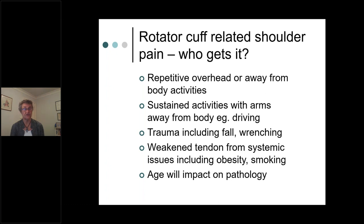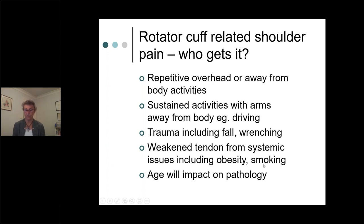There are systemic and lifestyle factors that can affect tendon pathology, including obesity and smoking. Age is also an important factor. An older person with a degenerative tendon may not need much force to sustain a tear, as tissue structures become less strong with age. A young person may need a lot of trauma and force to sustain a tendon tear. So age is always an important factor to consider when assessing rotator cuff problems.